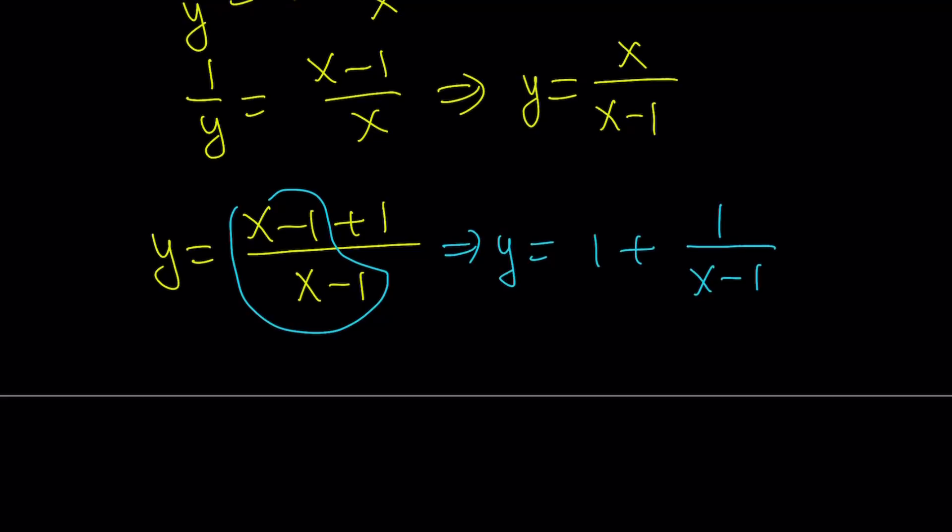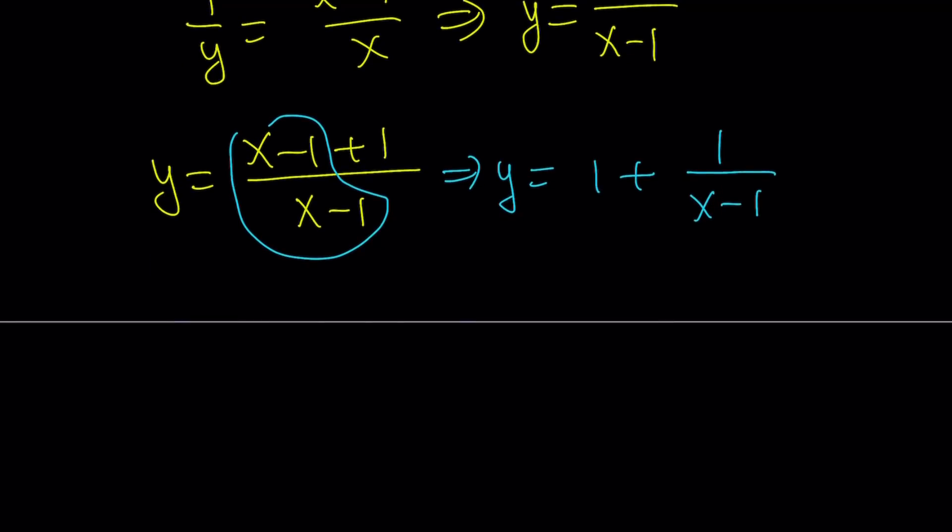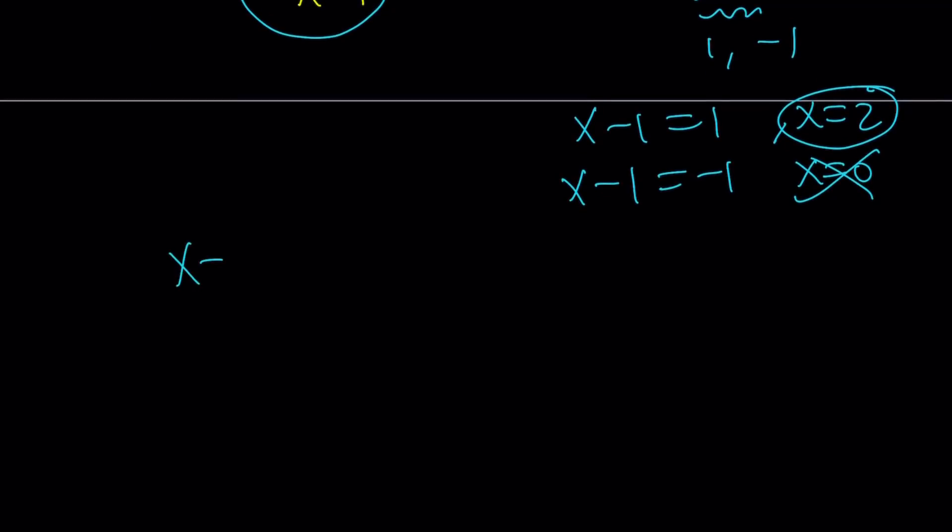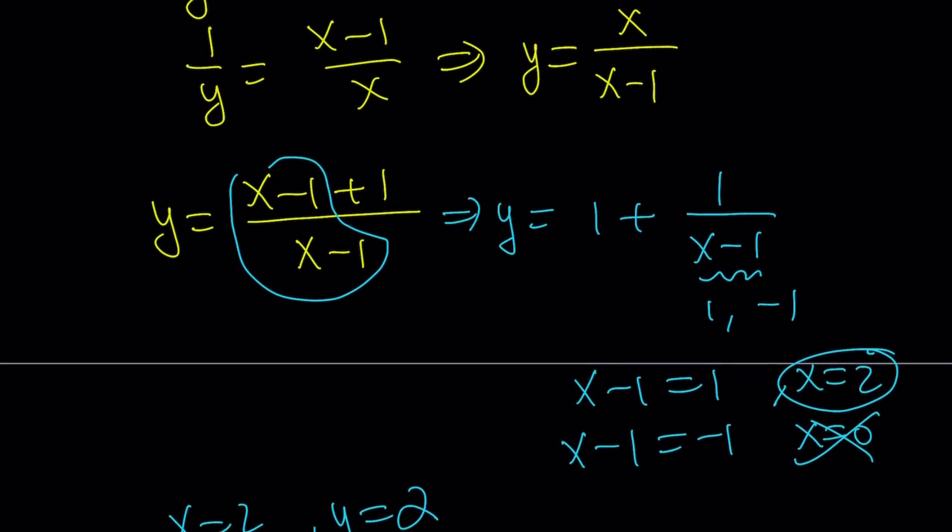Pretty much the same method because if you subtract 1 and cross multiply, you pretty much get the same thing. We're going to look at divisors of 1, and they can only be 1 or negative 1. But notice that if x minus 1 is 1, that means x is equal to 2, which is good. But if x minus 1 is negative 1, that means x equals 0, and that's no good. So we can only use x equals 2.